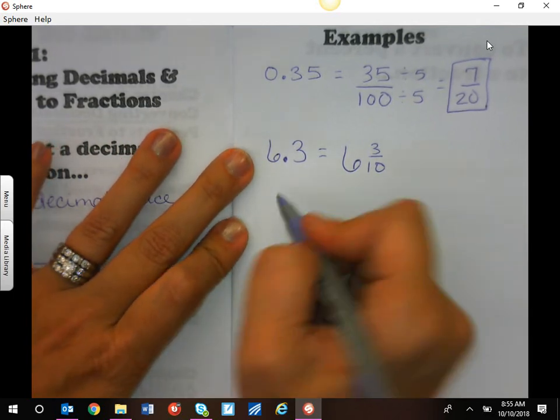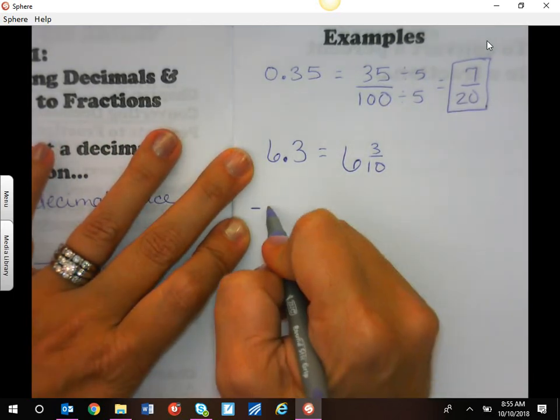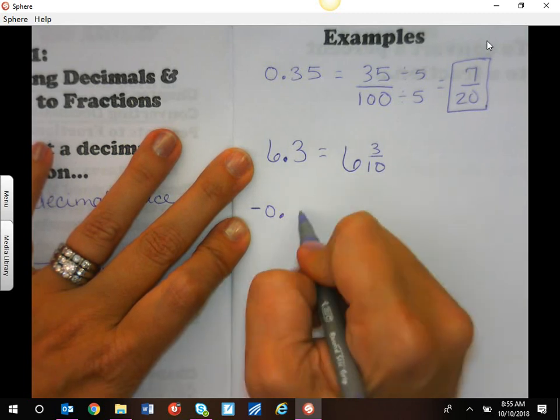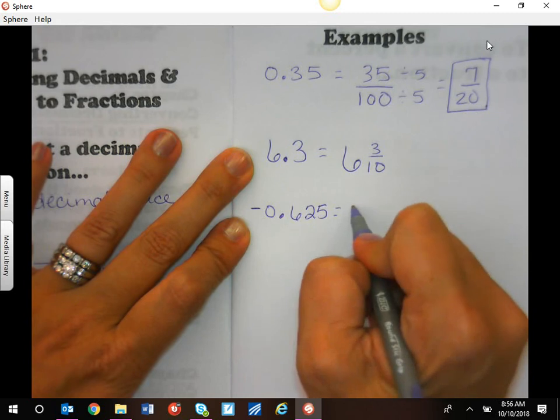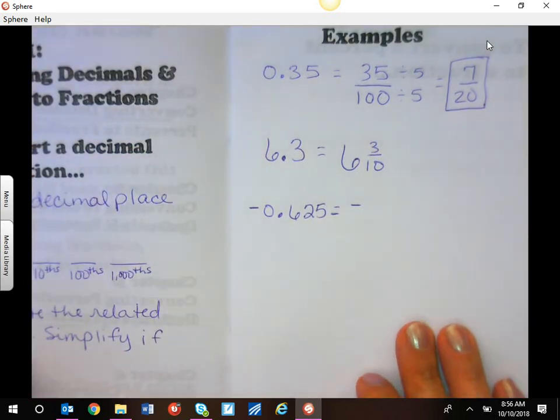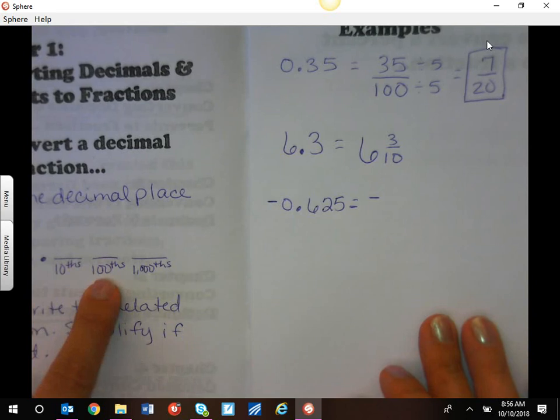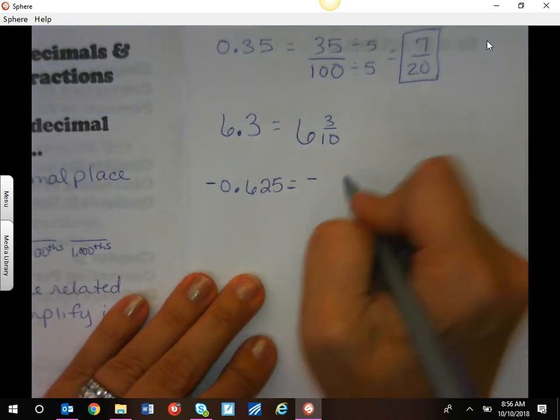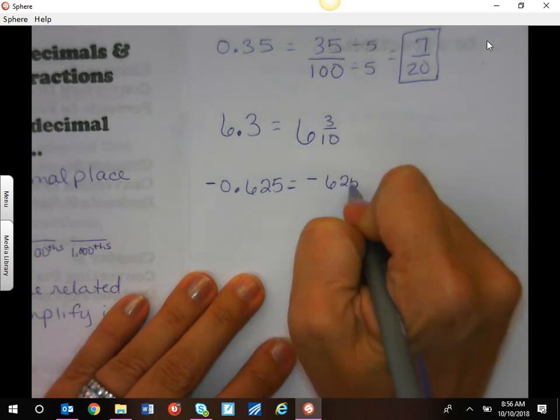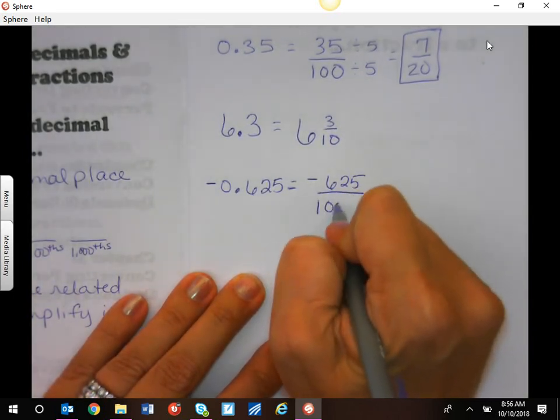We can do the same thing with negatives. I wrote negative point six two five. Again, that's not the correct way to say it. Make sure we keep our negatives. Six two five, the five is in the thousandth place, so I will write 625 over 1000.